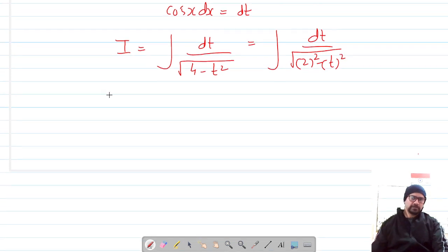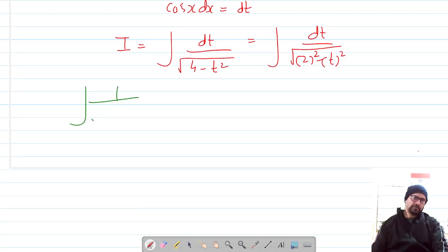Now this takes the form of the integration of 1 over the square root of a squared minus x squared dx, and we all know that it's sine inverse of x by a plus c, so let's use this here.